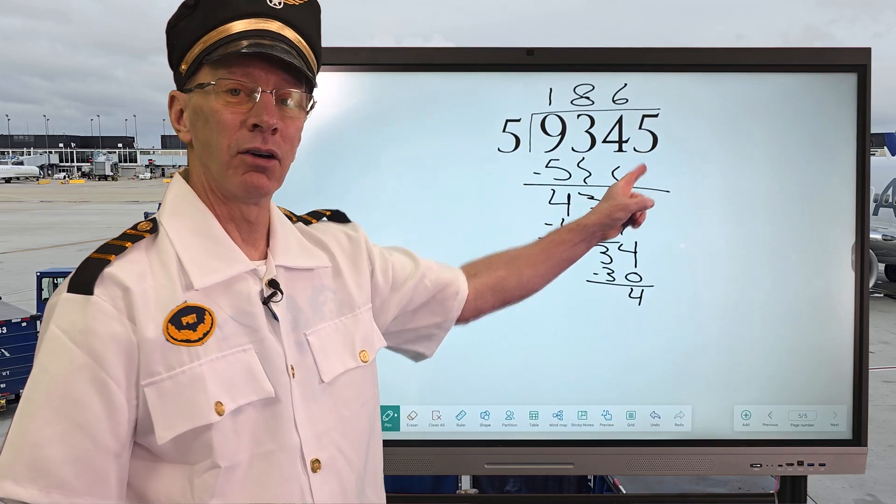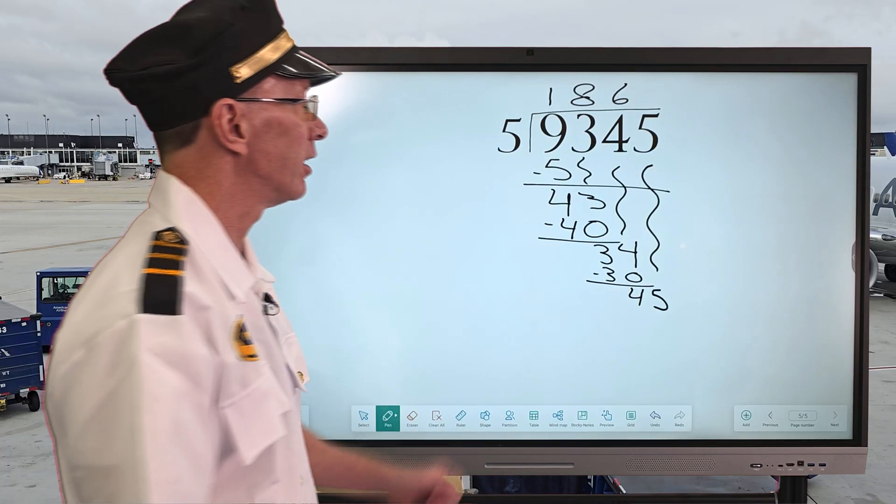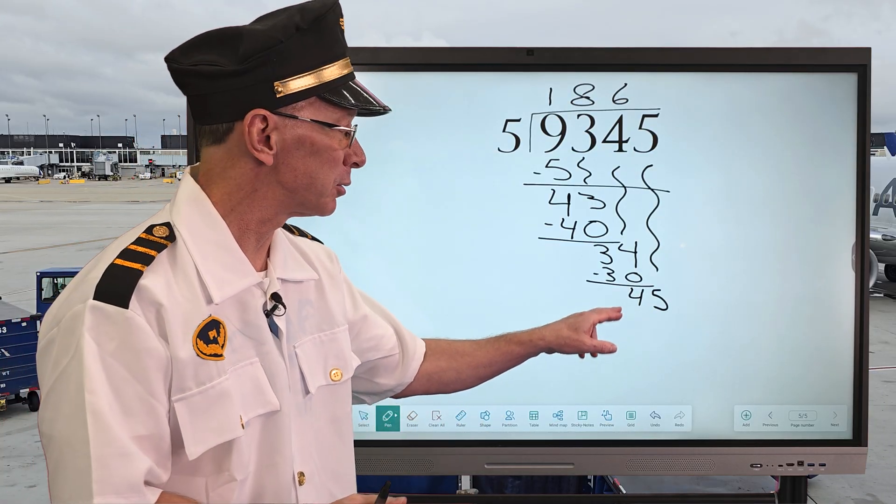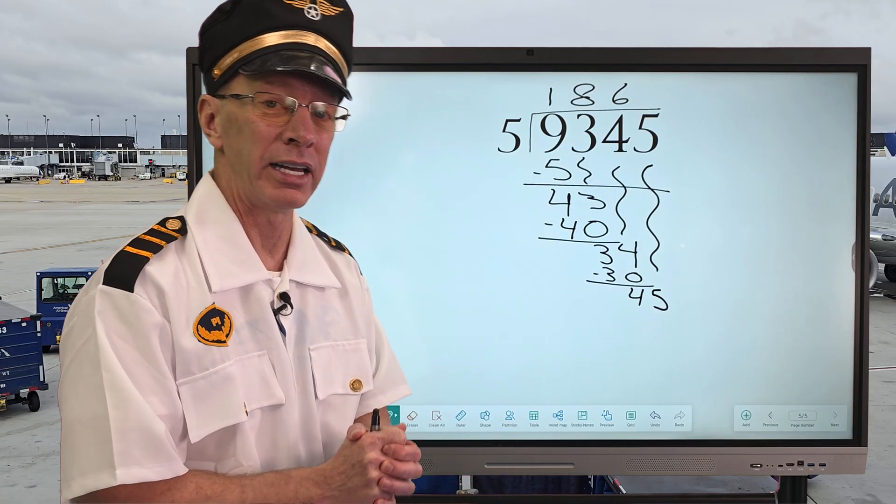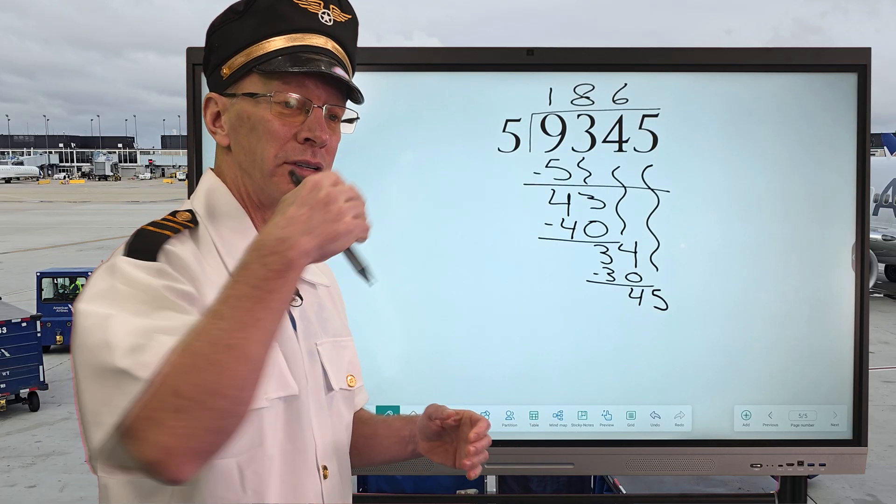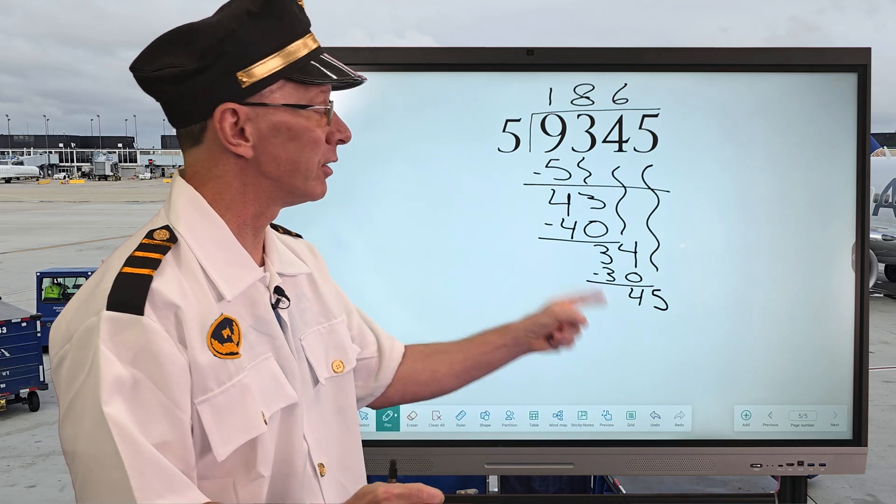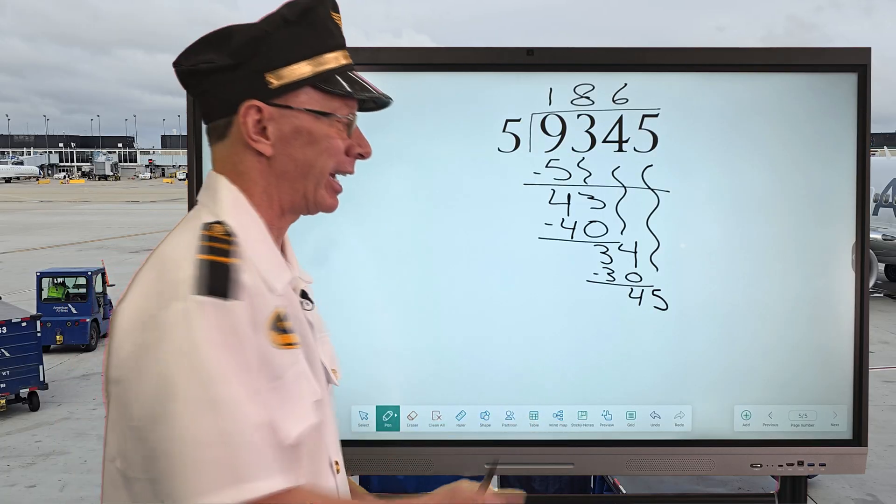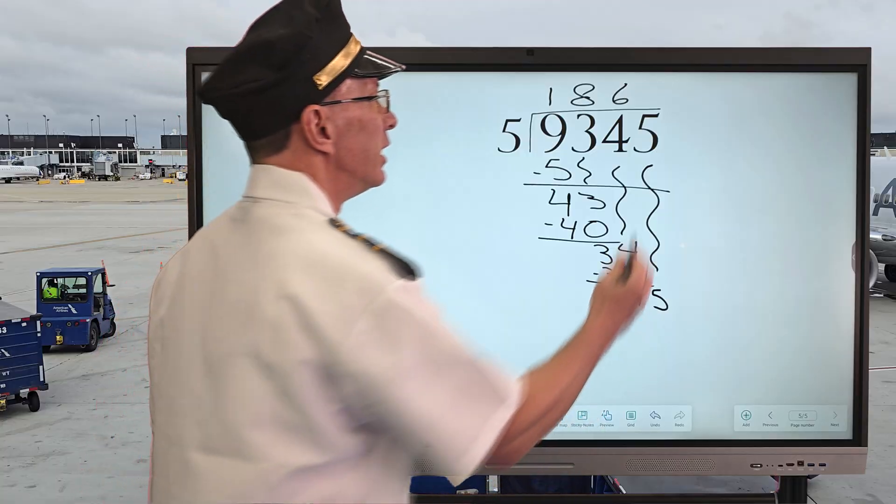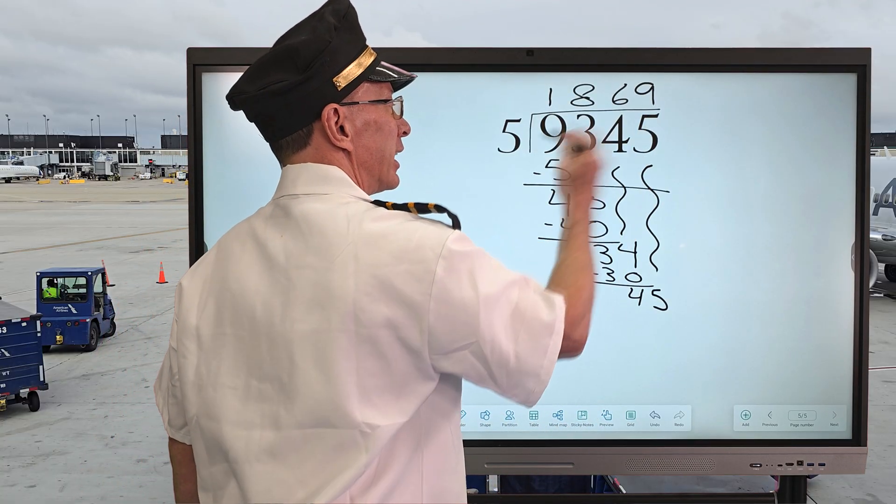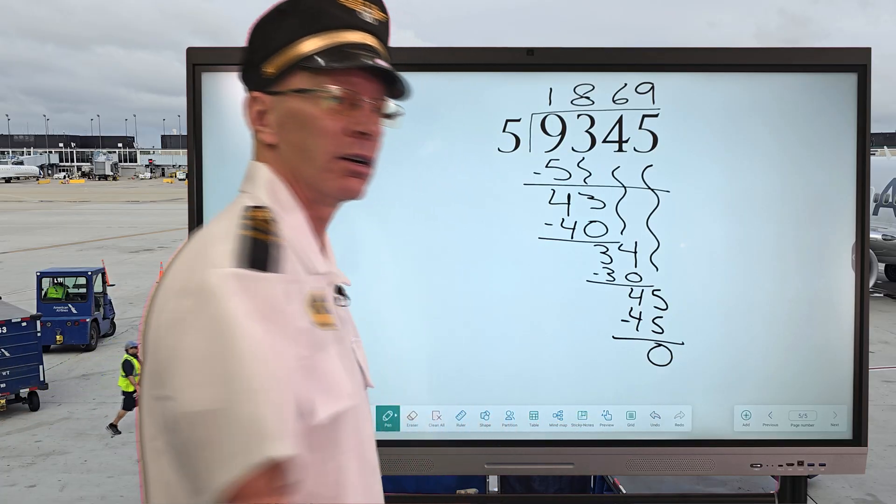So I bring down the 5 right here, all the way down here. And now just looking at this number right here, it's 45, so that's a multiple of 5. So I just know in the future I'm not going to have a remainder, which is really cool. So how many times can I put 5 into 45? 9. Actually, 4 plus 5 equals 9, just a little 9 trick there. So I'm going to go ahead and put 9 right here. 9 times 5 equals 45. Subtract, and 0.